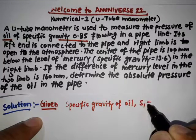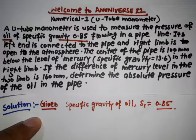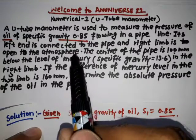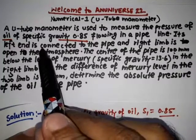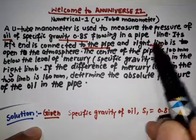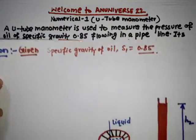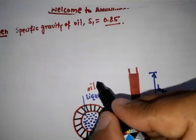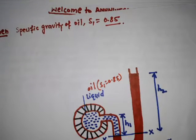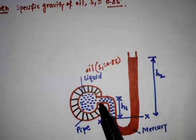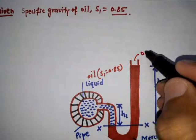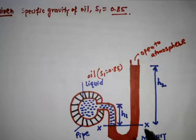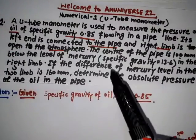Writing down the given variables: specific gravity of oil (light liquid) S1 = 0.85. The left limb of the U-tube manometer is connected to the pipe and the right limb is open to the atmosphere. The left end of the tube is inserted into the pipe in which oil is flowing, and the right limb is open to the atmosphere. The datum line is X-X.